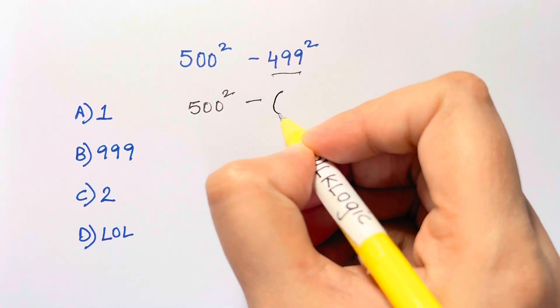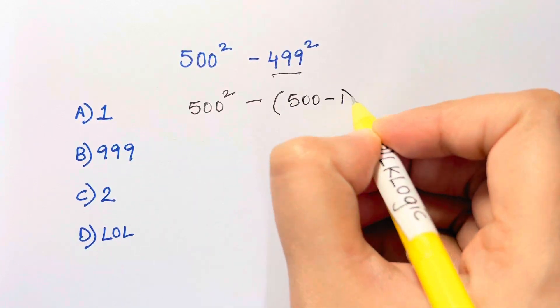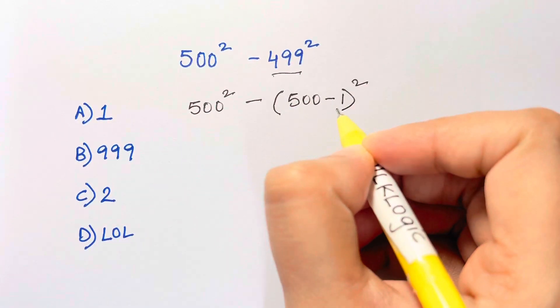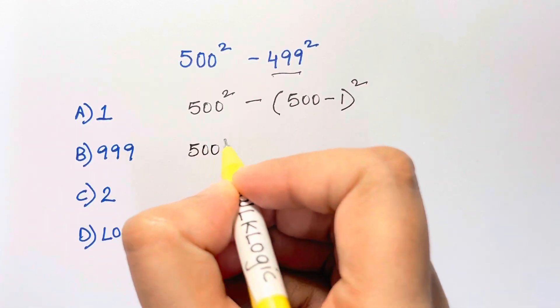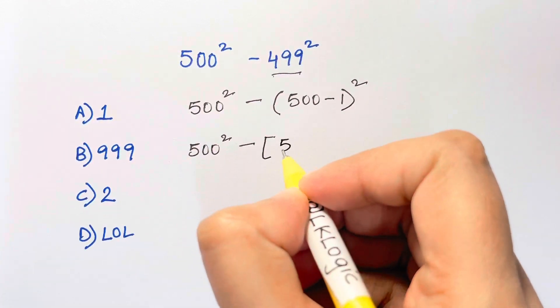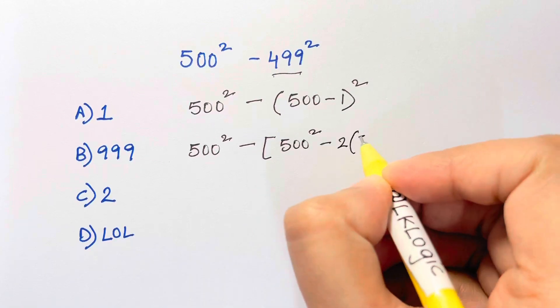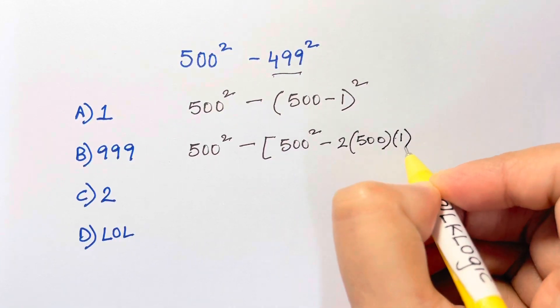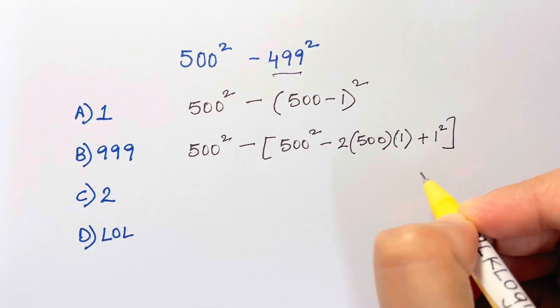That's (a-b)², so let's expand that: 500² minus 2 times 500 times 1 plus 1². Now that gives us 500² minus 500², minus 2 times 500 times 1, plus 1².